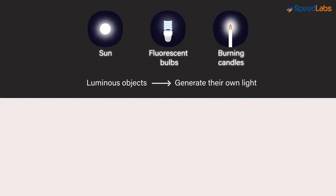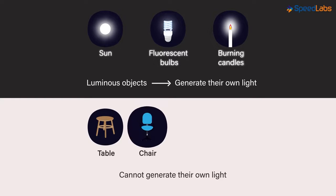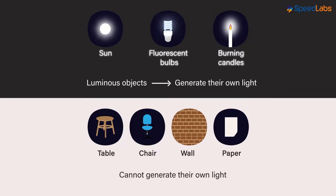Almost all of the objects that we come across cannot generate their own light. The table, a chair, wall, paper are few of such examples. Such objects are called as non-luminous objects.